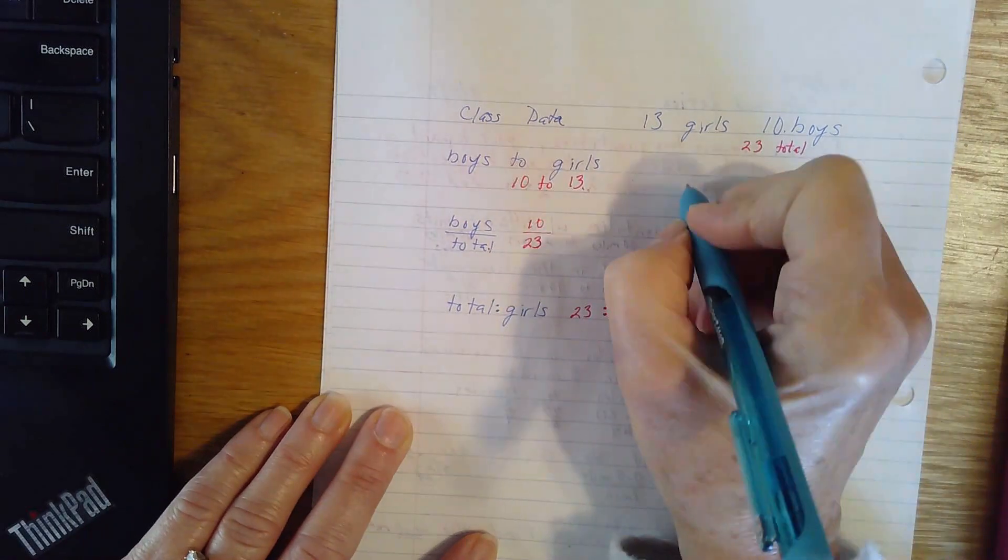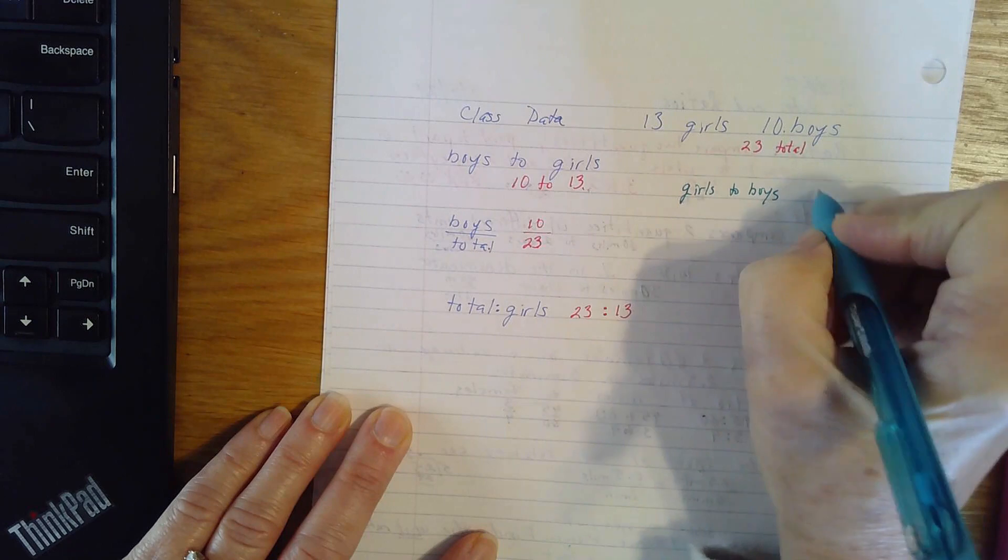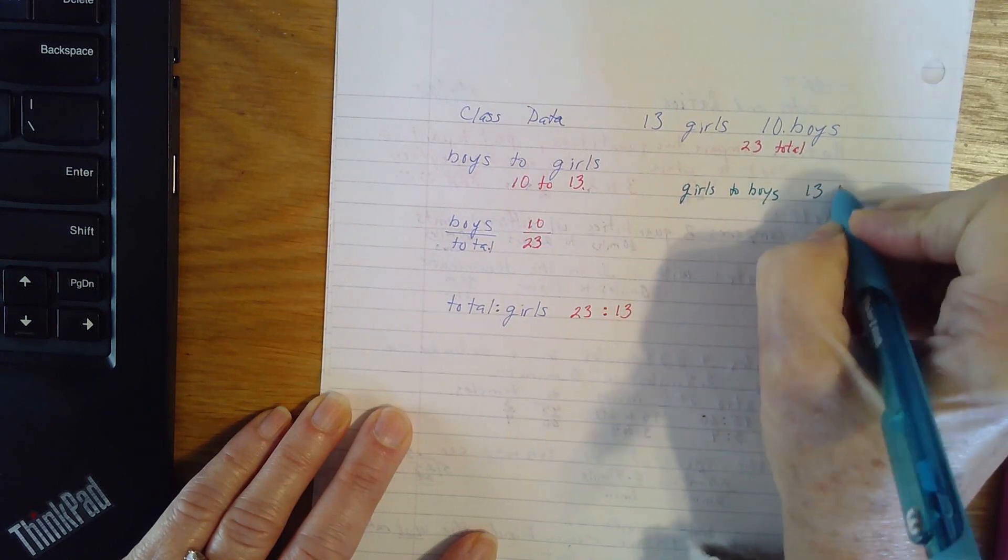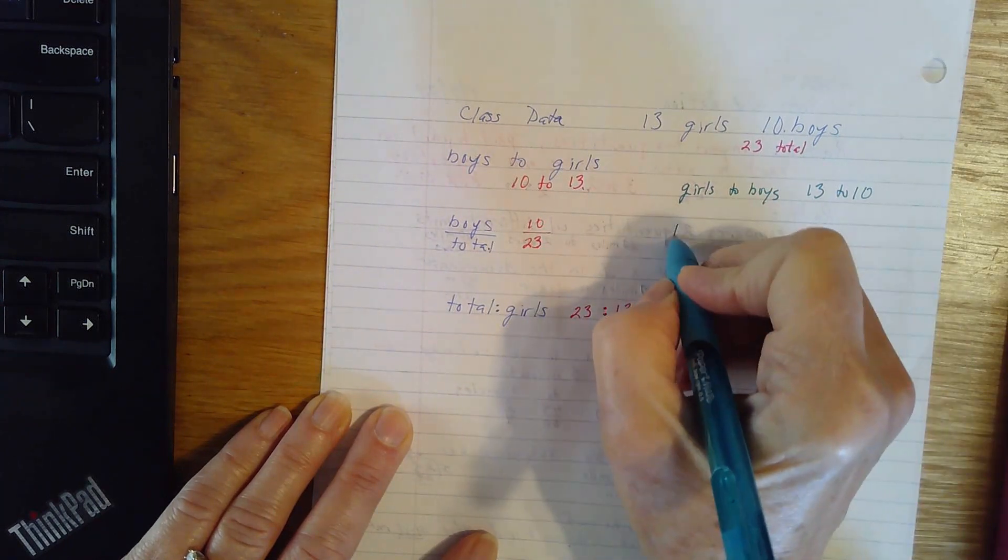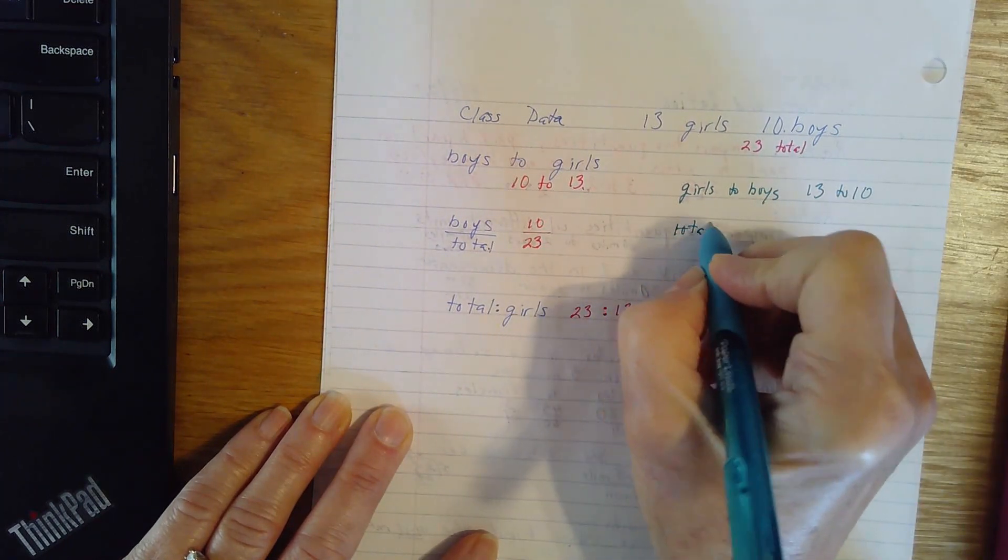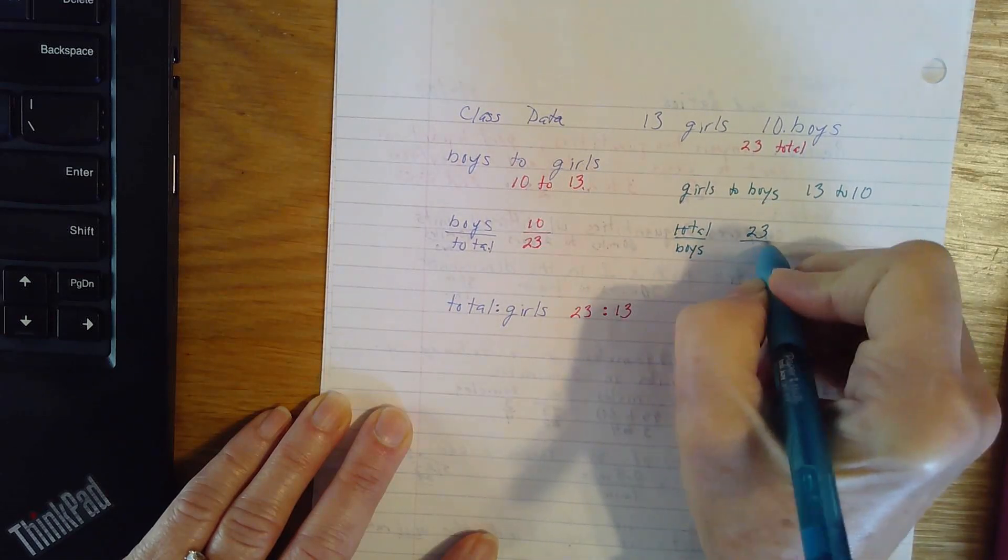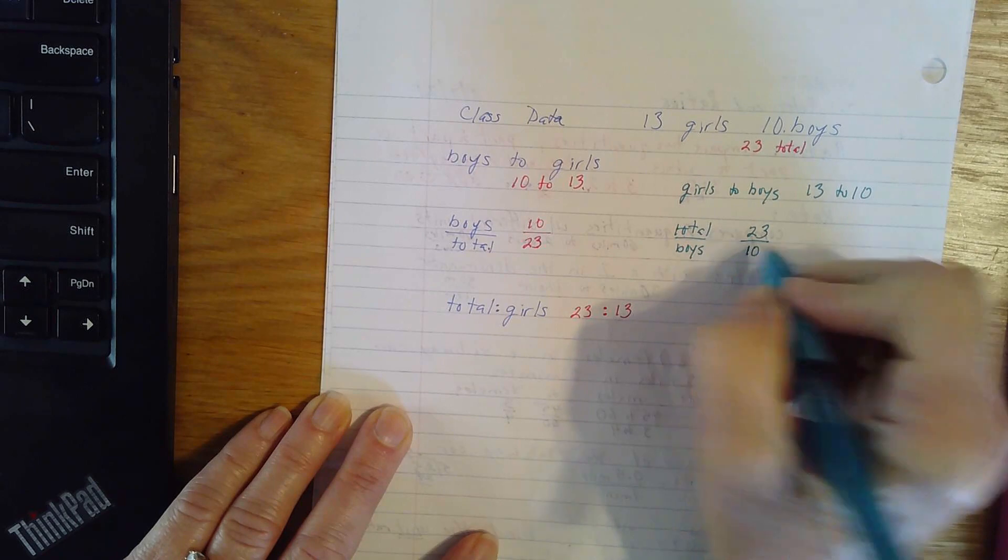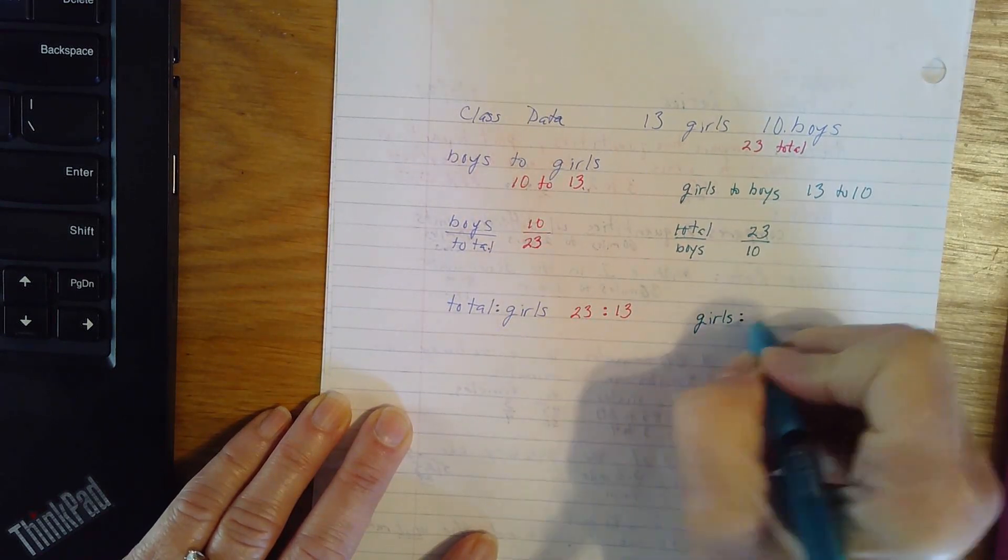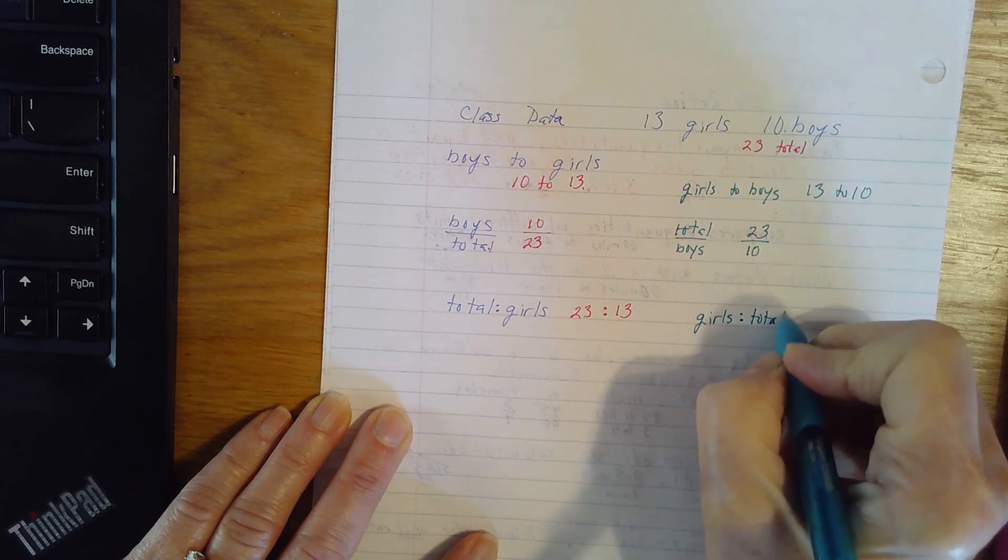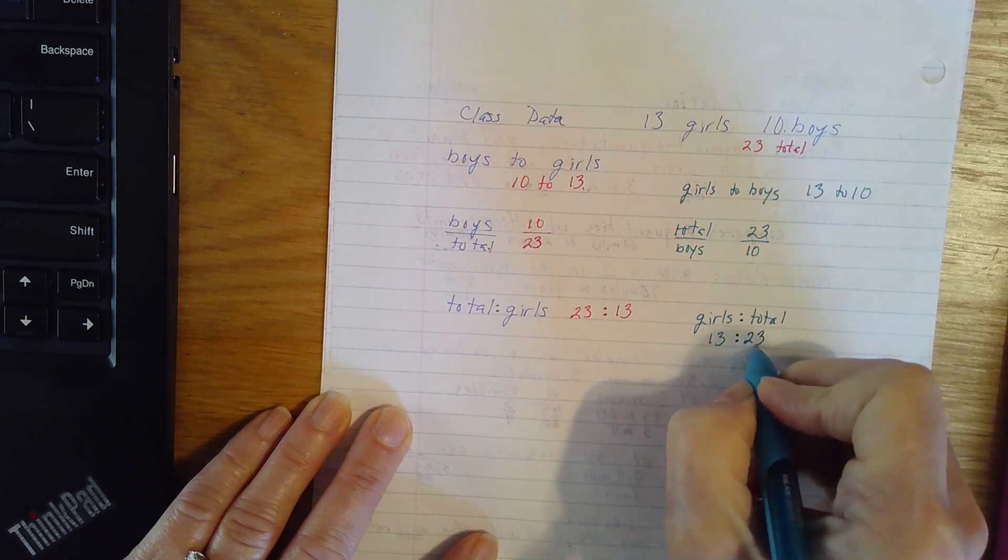I can also flip all of these around. So I could also write it as girls to boys. And that would be 13 to 10. I could flip this one. I could make it total to boys. So that would be 23 total to 10 boys. Or I could say that it was girls to total, using a colon. And that would be 13 to 23.